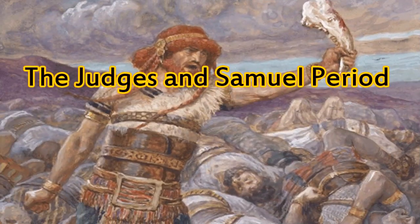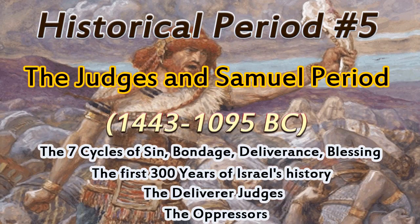Historical period number five, the Judges and Samuel period, 1443 to 1095 BC. The main events during the period of the Judges were number one, the seven cycles of sin, bondage, deliverance, and blessing. Every generation fell into this terrible cycle. First, they would forget God's commands and commit idolatry. Second, a foreign invasion would take place and bring severe oppression. Third, they would cry out to God for help. And fourth, God would send a judge or deliverer to save them.